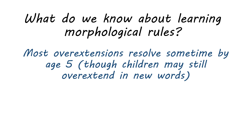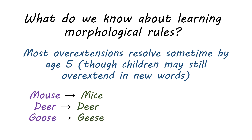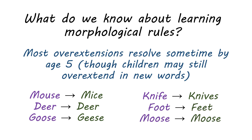Most overextensions tend to resolve by age five. Children will still overextend new things they learn, but for words they really know, they'll resolve most overextensions by age five or often earlier — mouse becomes mice again, deer becomes deer again, goose becomes geese again. They also learn new irregular plurals: knife becomes knives, foot becomes feet, moose becomes moose. This is how morphological learning tends to progress: a child learns a rule, overextends it, and then gradually those overextensions get resolved as they learn the irregular forms that don't follow the rule.